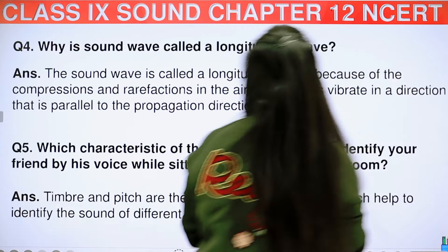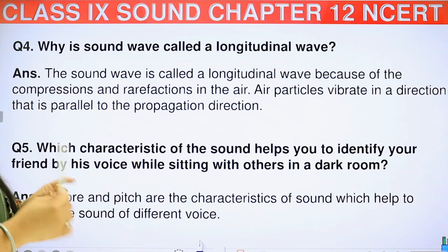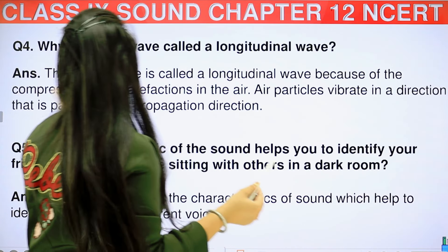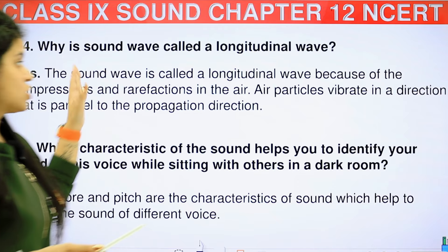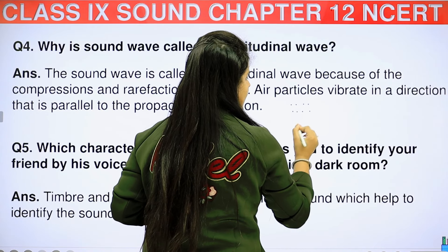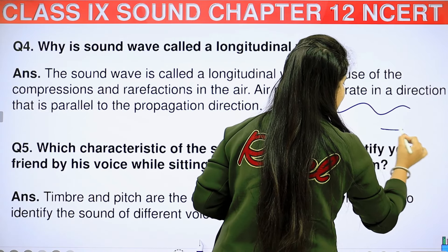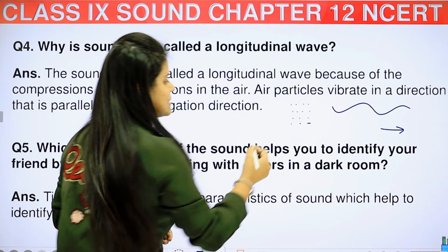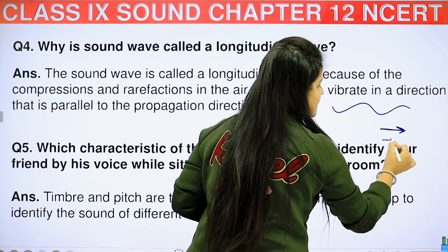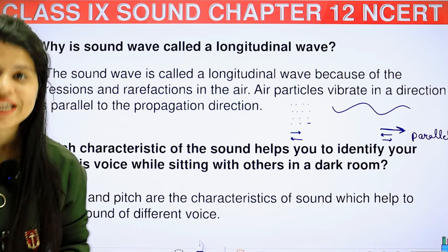Question 4: why is a sound wave called a longitudinal wave? The sound wave is called a longitudinal wave because of the compressions and rarefactions in the air — air particles vibrate in a direction that is parallel to the propagation direction. When we look at the wave movement direction and the particle movement — they move to and fro in this direction — the wave direction and the particle direction are parallel.